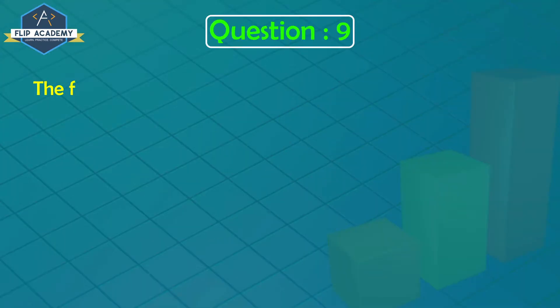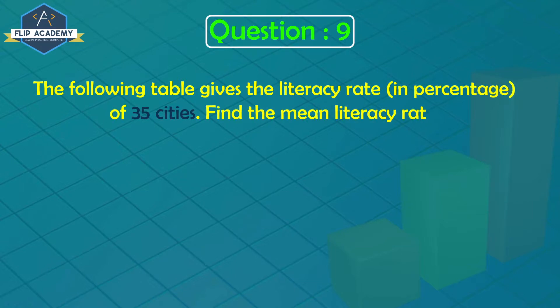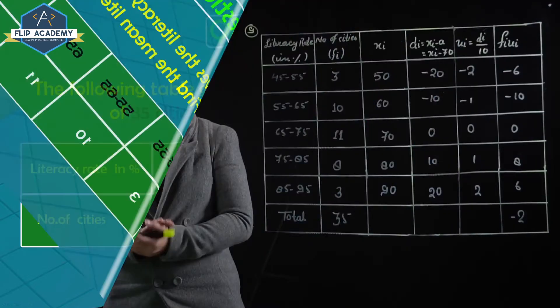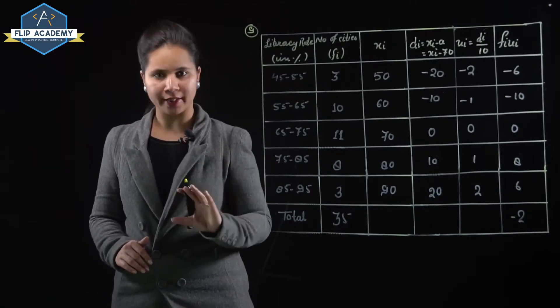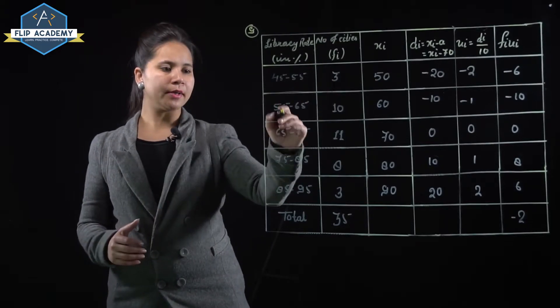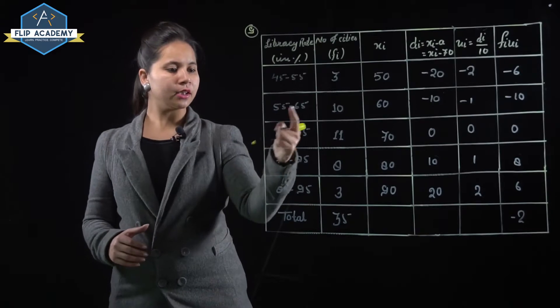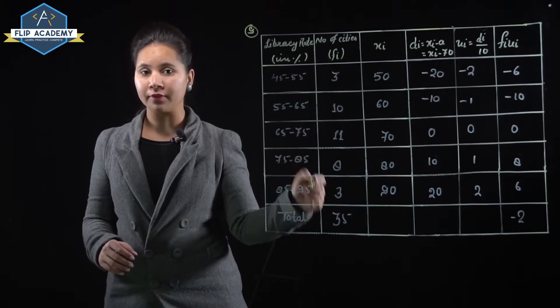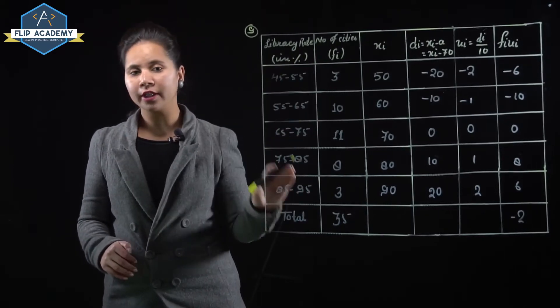Question number 9: The following table gives the literacy rate in percentage of 35 cities. Find the mean literacy rate. Literacy rate in percent: 45 to 55, 55 to 65, 65 to 75, 75 to 85, 85 to 95.